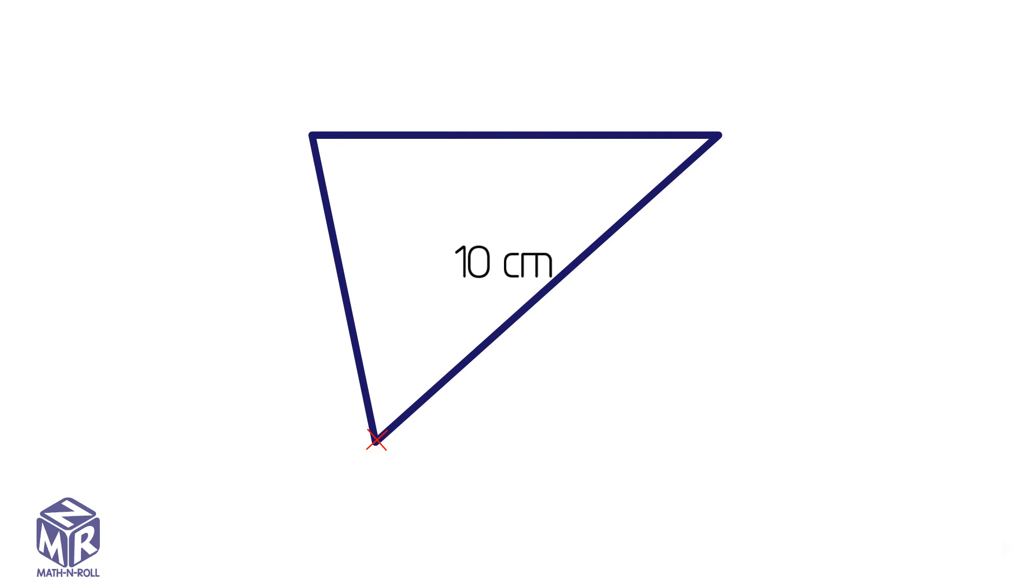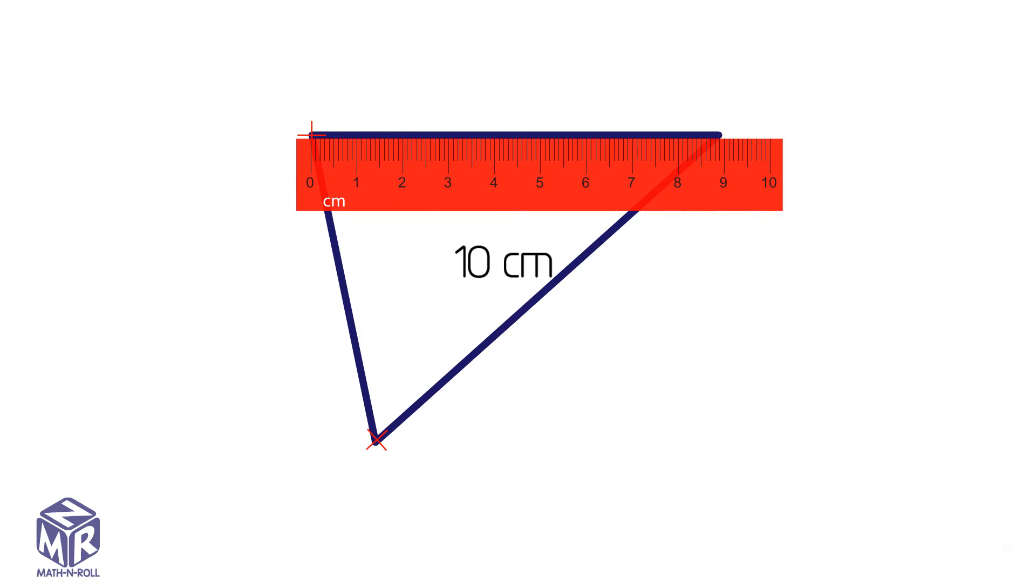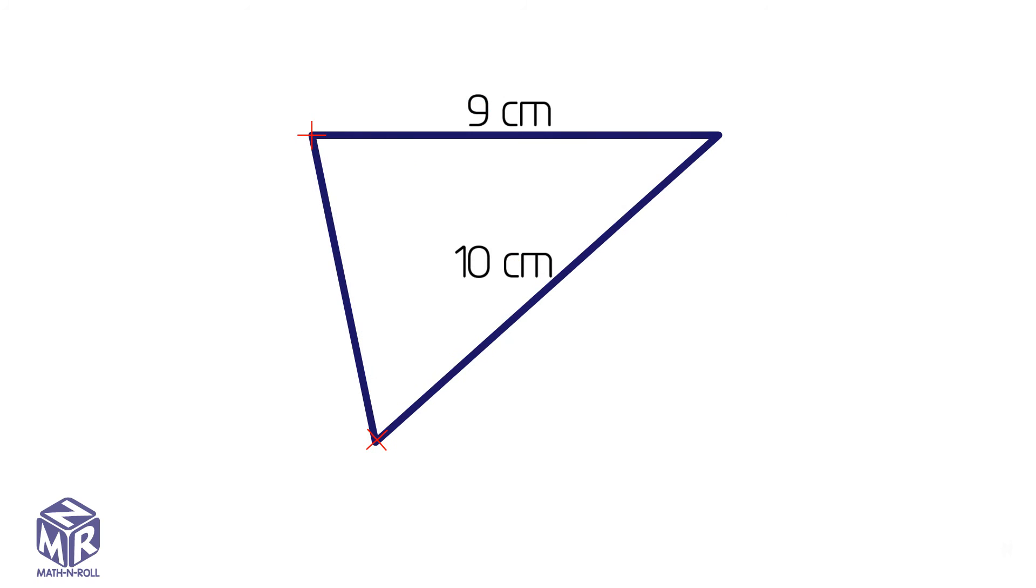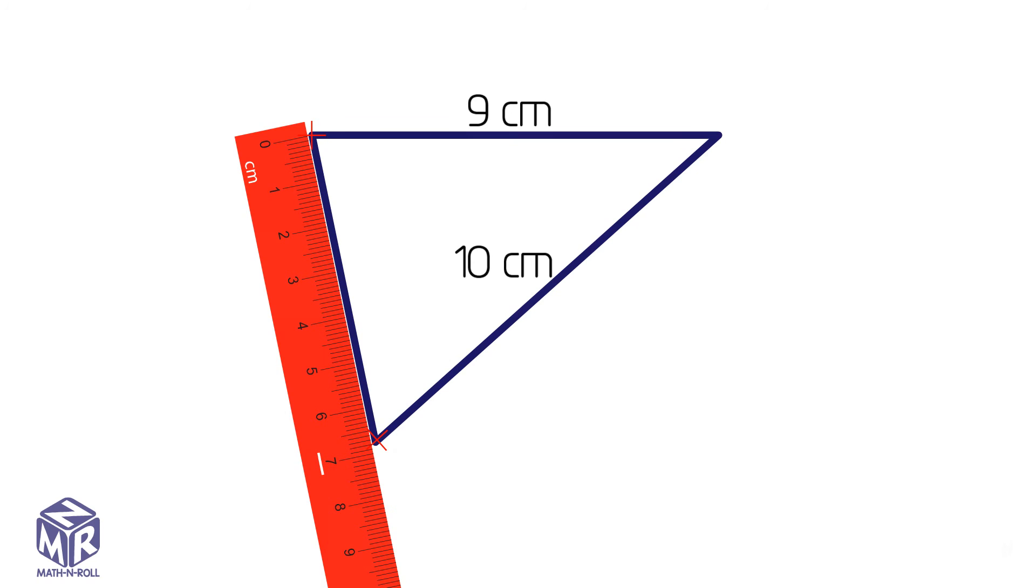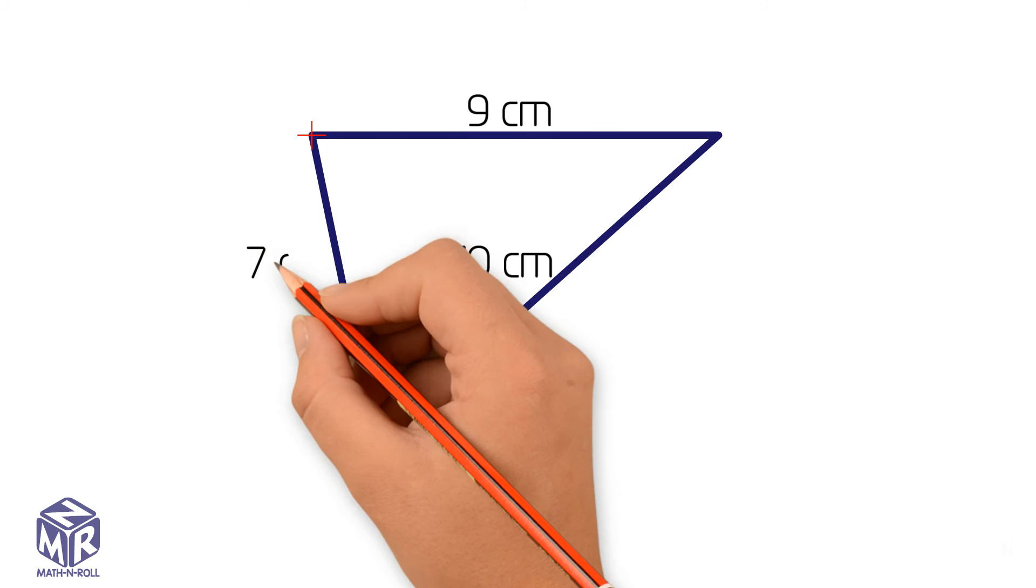Now let's measure the second side. Mark the starting point and line up the zero mark of the ruler with the starting point. The length of the second side is close to 9 centimeters, so we write 9 on this side. Let's do the same thing for the last side. The last side is close to 7 centimeters, so we write down 7 on the side.